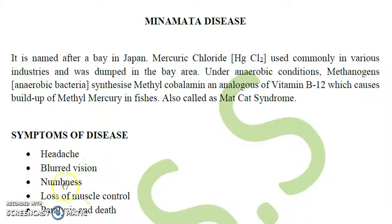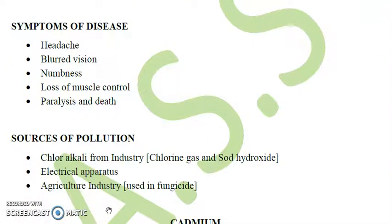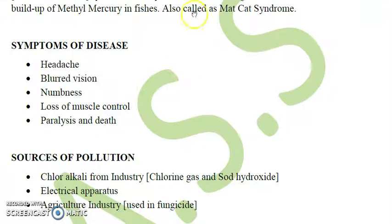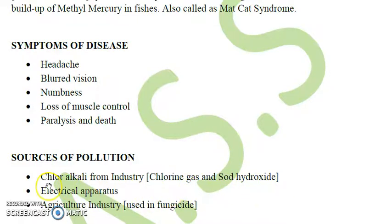Symptoms of Minamata disease include headache, blurred vision, numbness, loss of muscle control, paralysis, and death. It is sometimes also called mad cat syndrome. Sources of mercury pollution include coal-based thermal power plants, the chlor-alkali industry (where chlorine gas and sodium hydroxide are manufactured), electrical apparatus, and the agriculture industry where mercury chloride (HgCl2) is used as a fungicide.